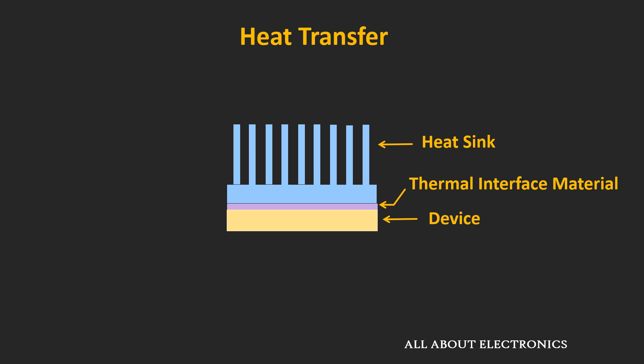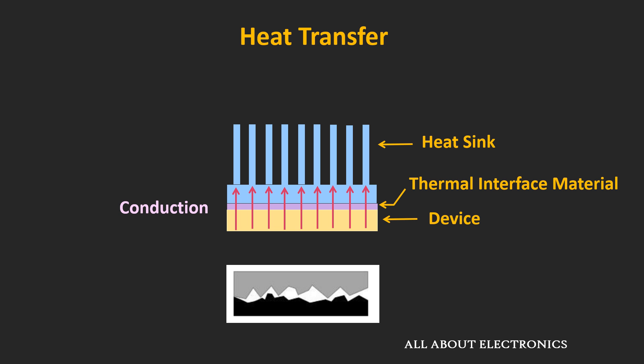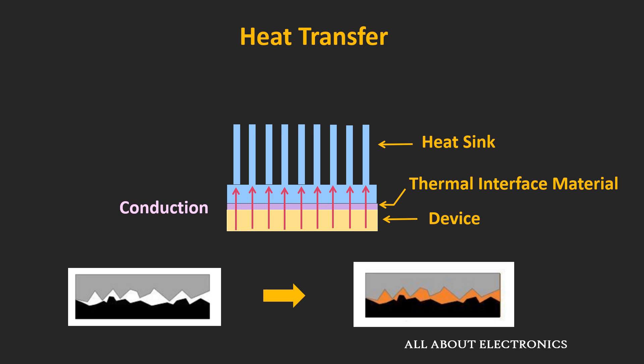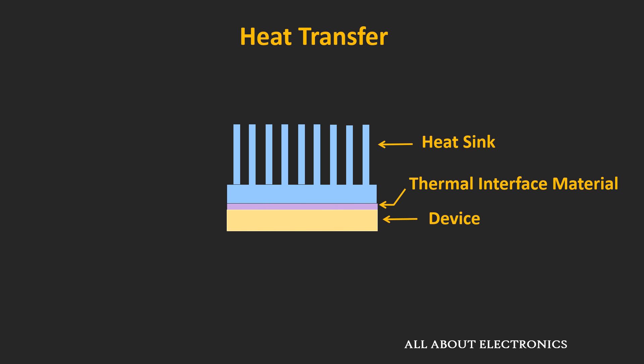Now let's see how heat transfer occurs when we connect a heat sink to a device. As shown in the schematic, the heat sink is connected to the device, and this device transfers heat to the heat sink via conduction. To maximize this heat transfer, the device and heat sink should be in proper contact. However, even with proper contact, at the microscopic level some air gap still remains between the two surfaces, which affects heat transfer. Using thermal compounds like heat sink compound, the air gap can be minimized, and the heat transfer between the device and heat sink can be maximized. From the heat sink, heat is then transferred to the surrounding through convection, and a minor amount is also transferred through radiation.